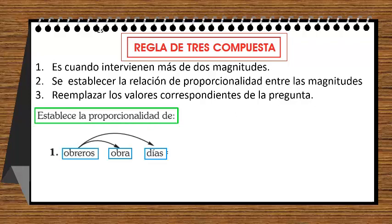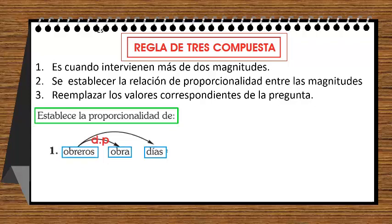Vamos a ver si aquí, en el inciso 1, obreros con obra, y obreros con días son inversamente proporcionales o directamente proporcionales. Obreros con obra viene a ser directamente proporcional. Obreros con días viene a ser inversamente proporcional.